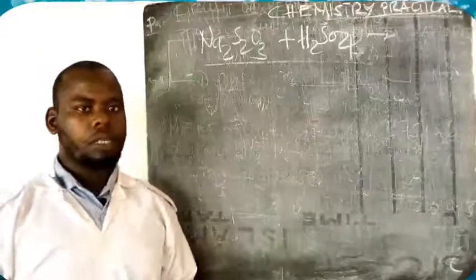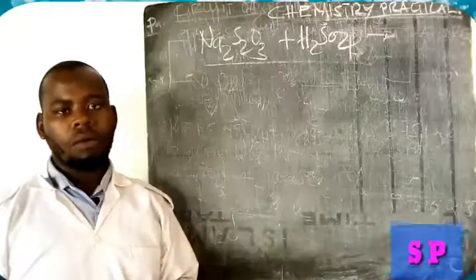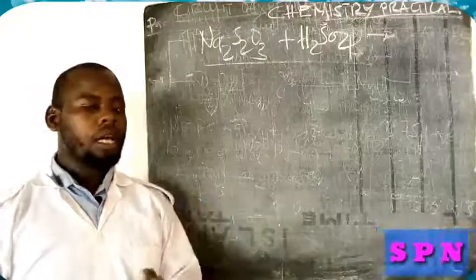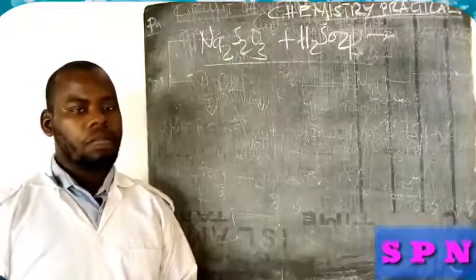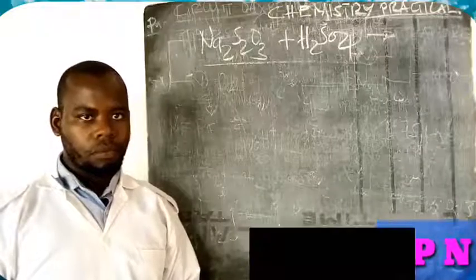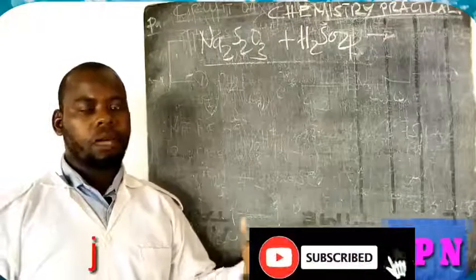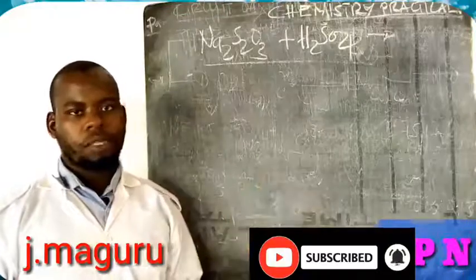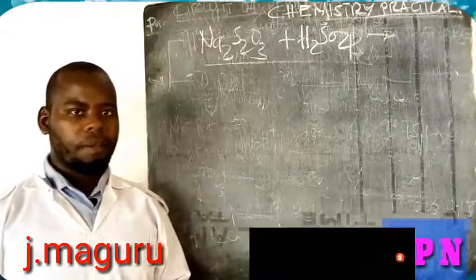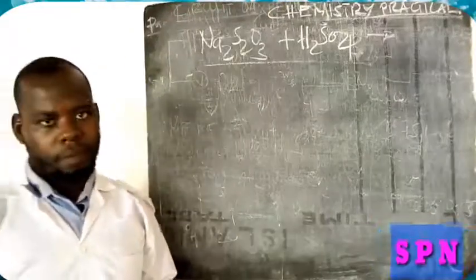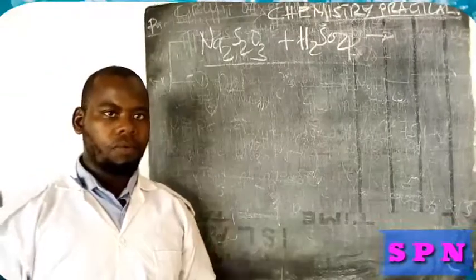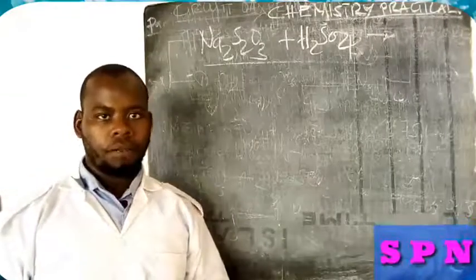Today we are going to talk about how sodium thiosulfate reacts with sulfuric acid. Previously we have seen how sodium thiosulfate reacts with nitric acid. So now we have sulfuric acid.